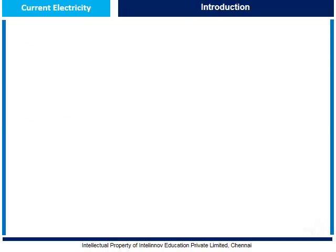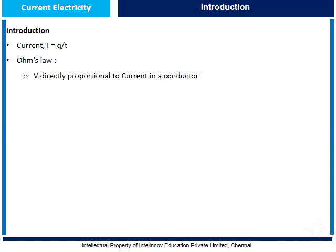Let us have a first-hand introduction about current electricity. We know current I is equal to Q by T — that is the total charge divided by time — and Ohm's law, where voltage or potential is directly proportional to the current in a conductor. This can be given as V equal to RI. R can be expressed as R equal to rho into L by A, where rho is resistivity, meaning resistance is directly proportional to length but inversely proportional to area.